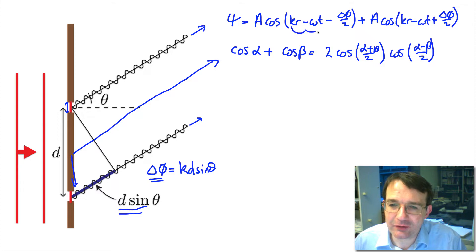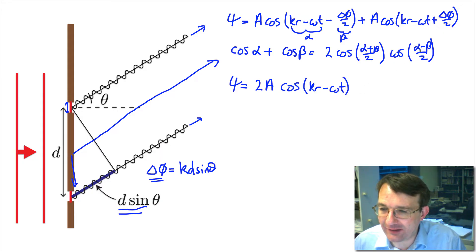I'm going to call this alpha and this is going to be beta. When we put these together, psi is going to be equal to 2 times a times the cosine of kr minus omega t, and the half the difference between the two is delta phi over 2, so this is cosine of delta phi over 2.